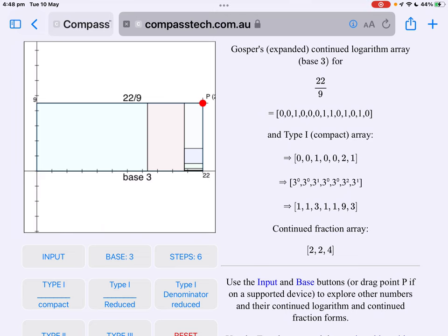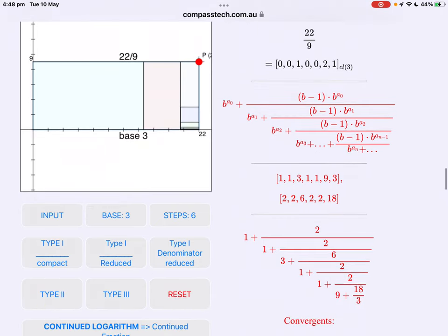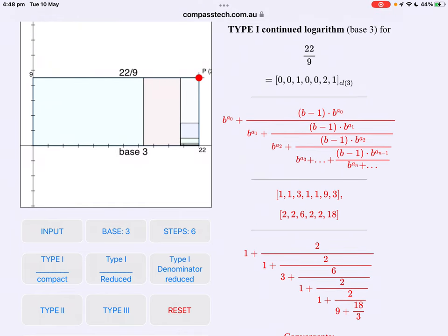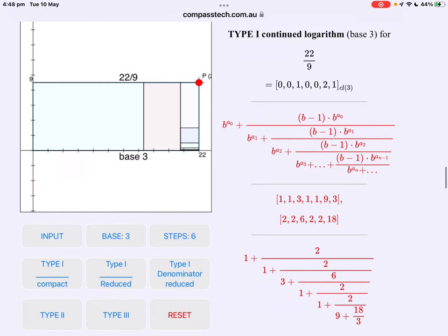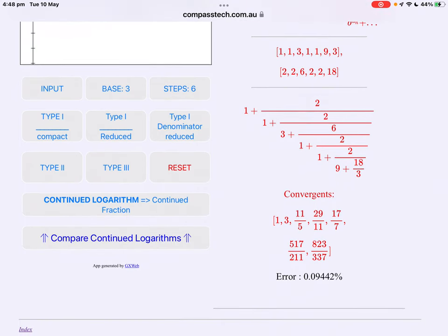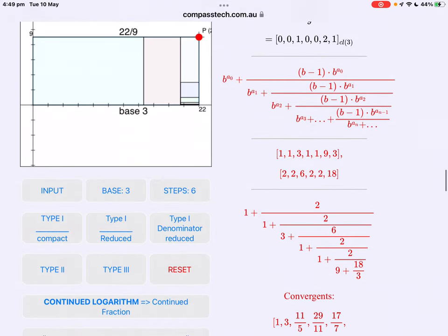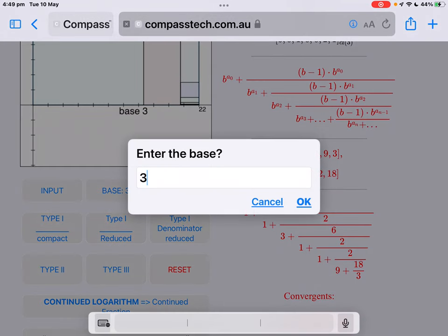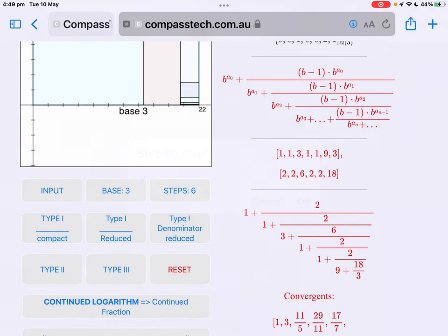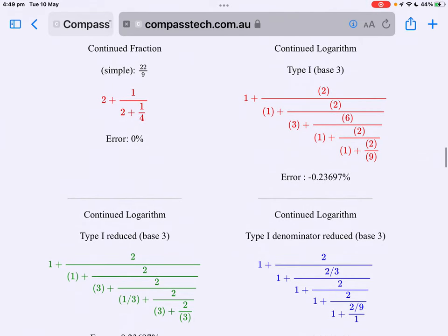Now we're still sticking with base 3 for the moment. Let's have a quick look at what these look like. Now the type 1 continued fraction for 22 over 9, base 3 now. Same formula. We start with the same Gosper compact array. Well, this is the base 3 array. 0, 0, 1, 0, 0, 2, 1. We end up with something that looks quite different to our base 2 array. So 22 over 9, base 3. We won't do step by step. I'll leave that as an exercise.